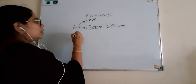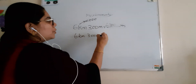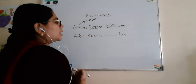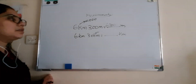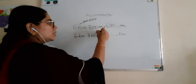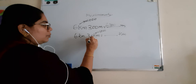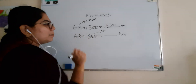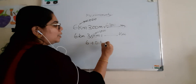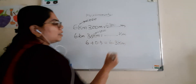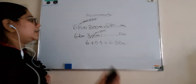Now convert 6 kilometer 300 meter to kilometer. Meter is less than kilometer, so small to big means divide by 1000. So 300 divided by 1000 — shifting 3 decimal places — gives 0.3. Therefore 6 plus 0.3 kilometer equals 6.3 kilometer.